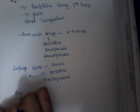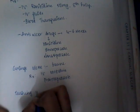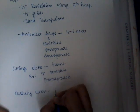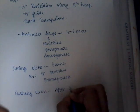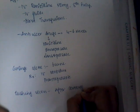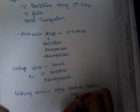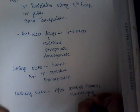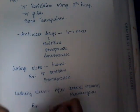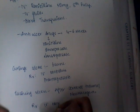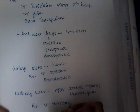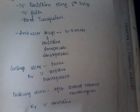Cushing ulcers occur after cerebral trauma or after neurosurgery. The best thing is IV ranitidine. So this is about acute peptic ulcer.